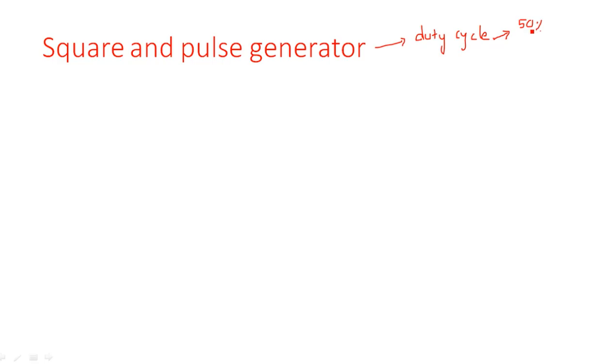If you say a square waveform, duty cycle must be 50 percent. If duty cycle is 50 percent, we can say the waveform is a square waveform — that means on time period is equal to off time period. The formula of duty cycle is: duty cycle equals T-on divided by total time period, which is T-on plus T-off. If both half cycles have equal time periods, then duty cycle is equal to 50 percent.